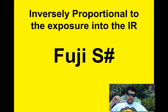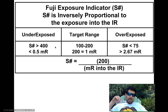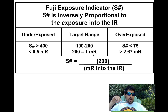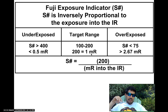The next indicator is inversely proportional. That means when dose goes up, the S number goes down. Our range is 100 to 200. They calculate the sensitivity number as 200 divided by MR into the plate. So if you have an S number of 200, you got 1 MR into the plate — and it's CR, so it needs more dose than DR. DR can work fine with as little as half or a quarter MR.